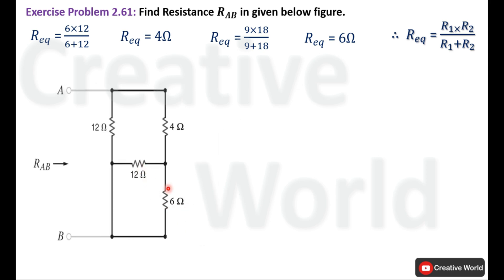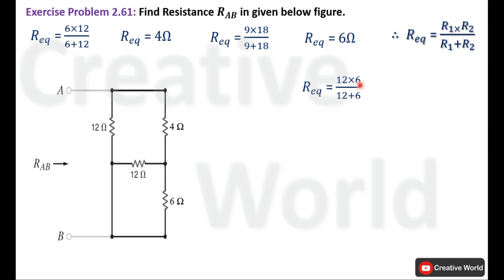Now two more resistances are in parallel. Using the same formula with R1 equal to 12 ohm and R2 equal to 6 ohm: the product of 12 and 6 is 72 and the sum is 18. Dividing 72 by 18 gives 4 ohm. We replace these two resistances with a single 4 ohm resistance.